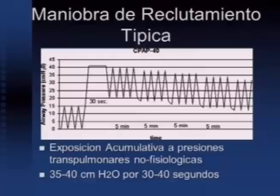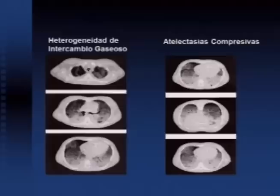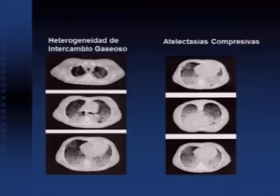I took the liberty today to speak about lung recruitment maneuvers because there isn't sufficient information for a full presentation. There are different maneuvers, but they're not very straightforward. There's much heterogeneity in gas exchange. These CT scans show areas of compressive atelectasis, no air being distributed through the ventilator. We see the baby lung — the area that opens and closes with each breath at the basal level.